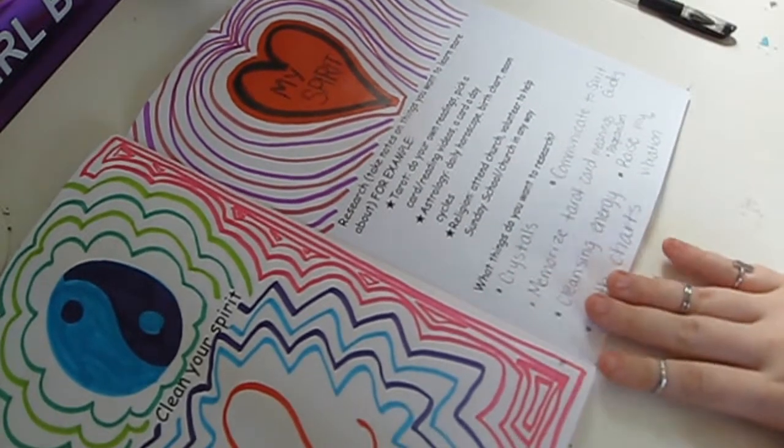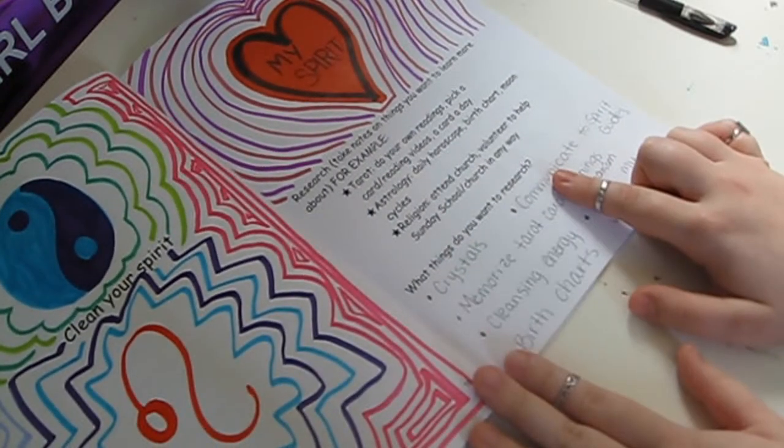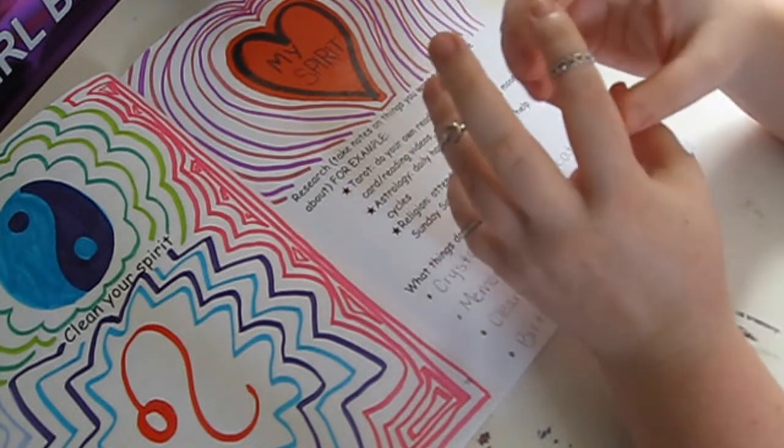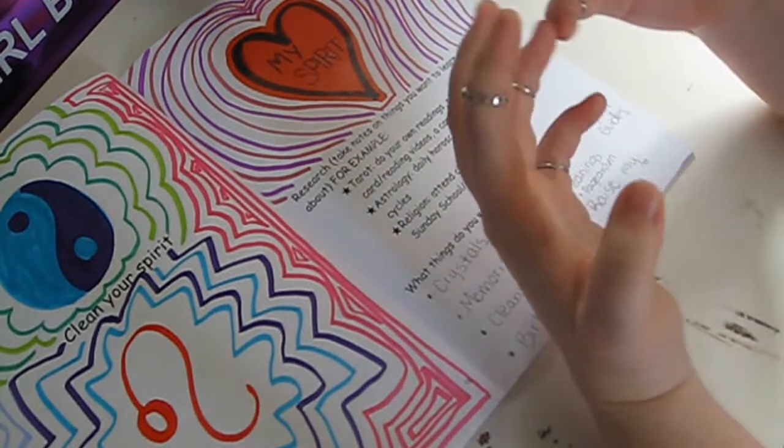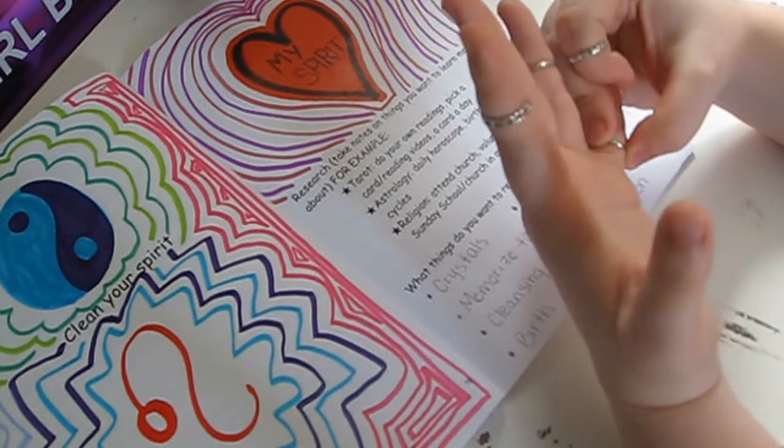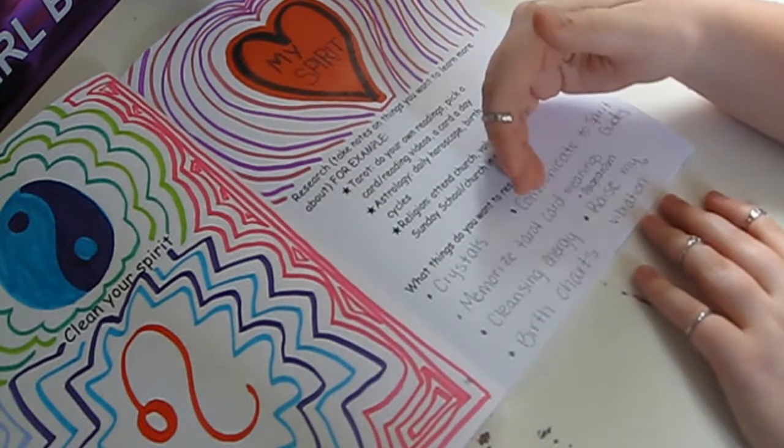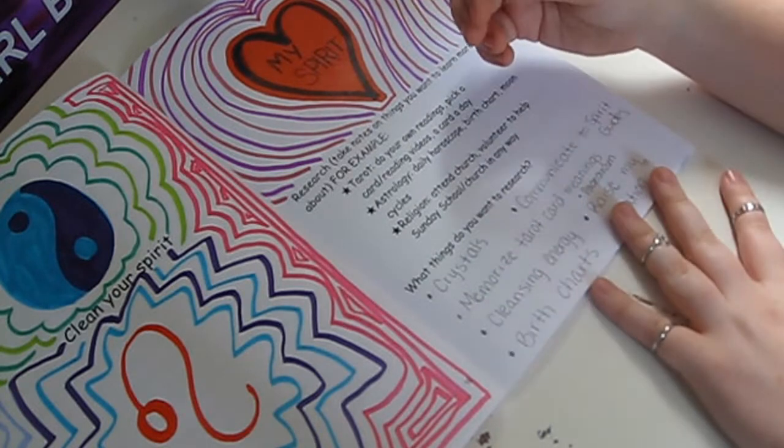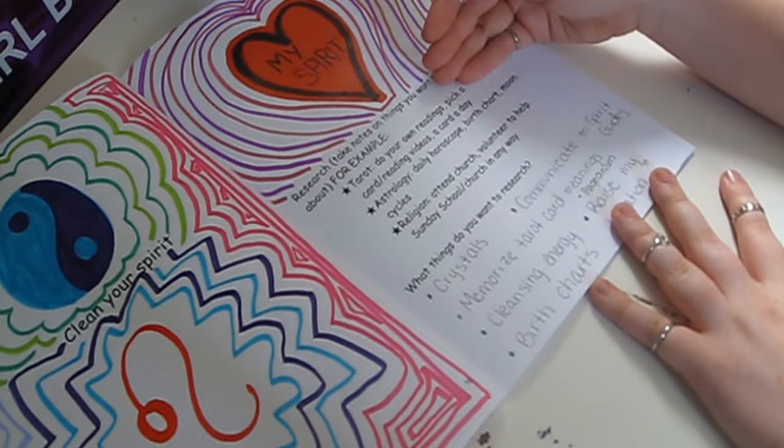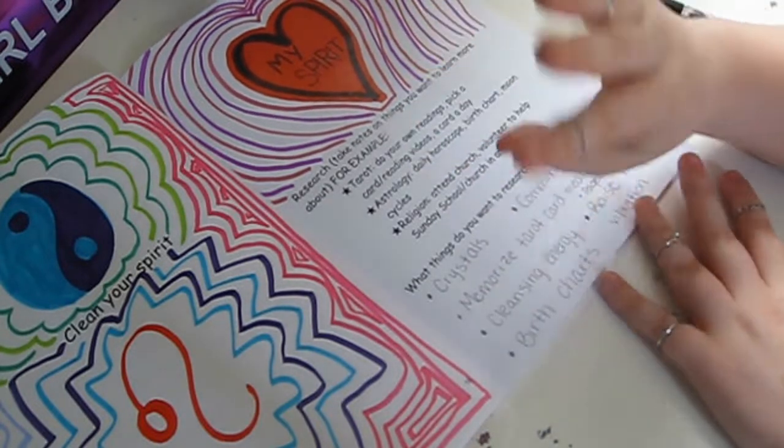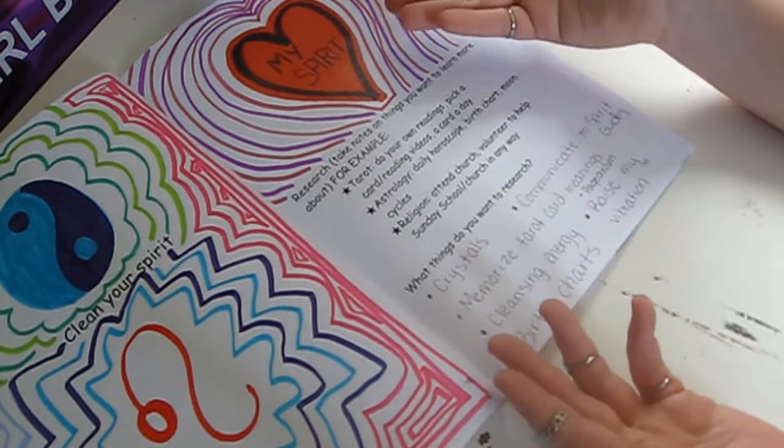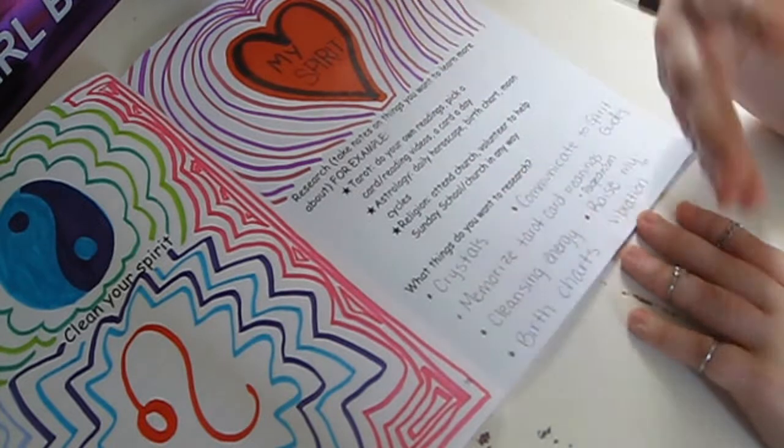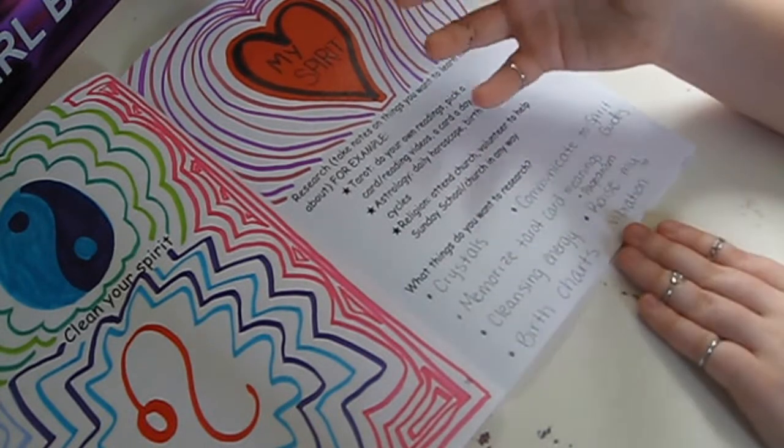The first question I put in my workbook is what things do you want to research? For me especially, I would like to research more about crystals and the meaning of crystals because crystals have a lot of energy in them from what I've learned so far. I feel like there's a lot more things I could be learning about crystals and I do have a lot of them so I should do more research. Memorizing tarot card meanings - I am a tarot card reader that I do on the side as a hobby. One thing for me is I do know most of the meanings, it's just sometimes I'm like what does that mean again? I know the overall gist, I just would really like to memorize them, especially when it comes to love readings or career readings where there's different meanings for different aspects of your life. Cleansing energy - cleansing my aura, cleansing my energy from all the negative energies from the world.